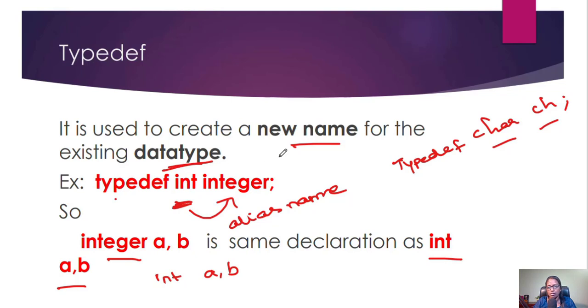I'm using int a, b. Int is the keyword. Suppose if I want to give another name for this int, I can use typedef. This is also called an alias name.